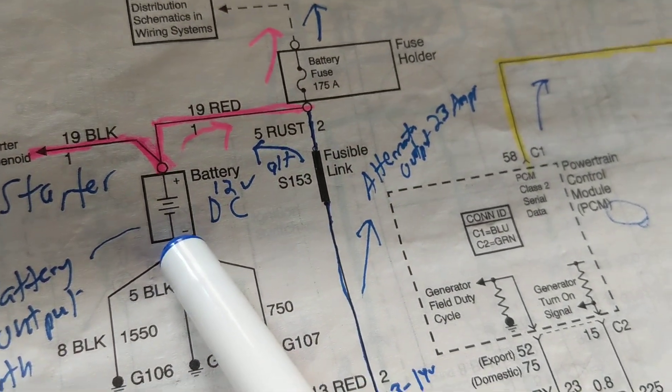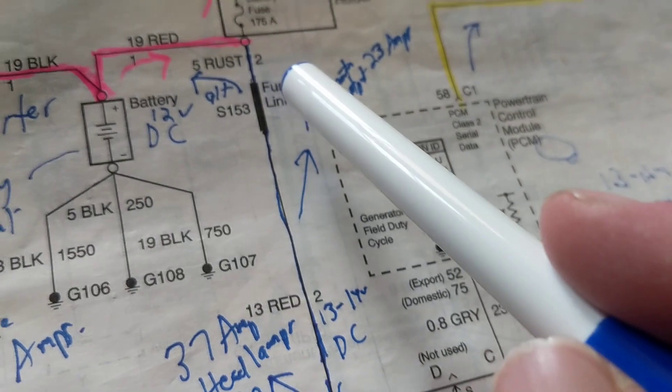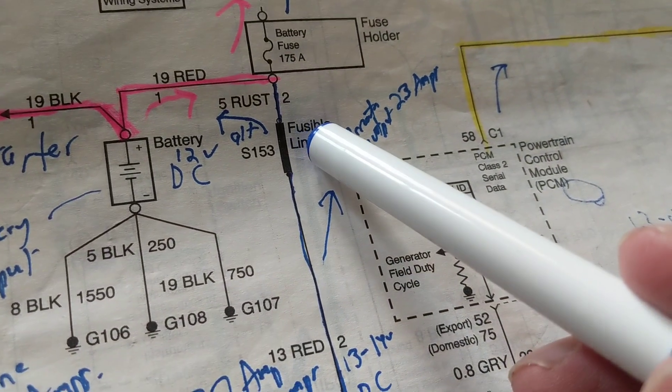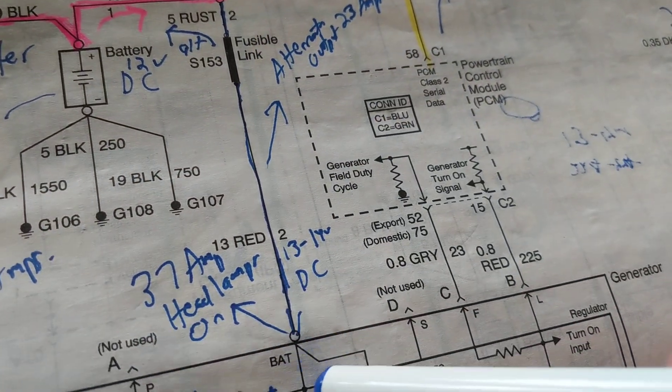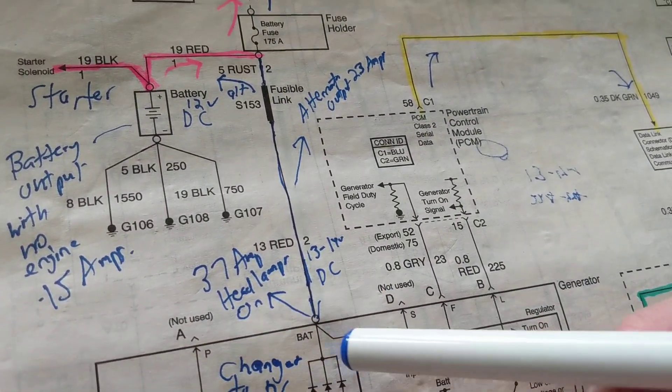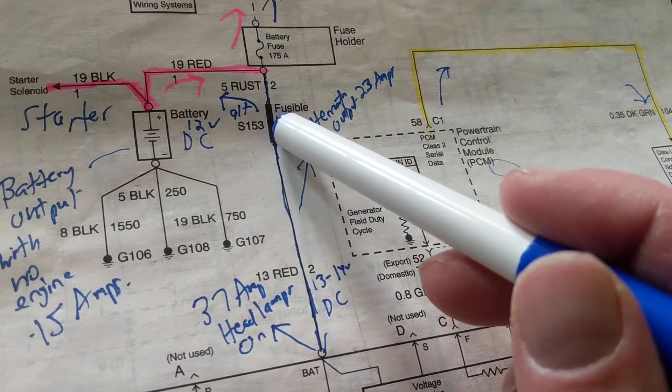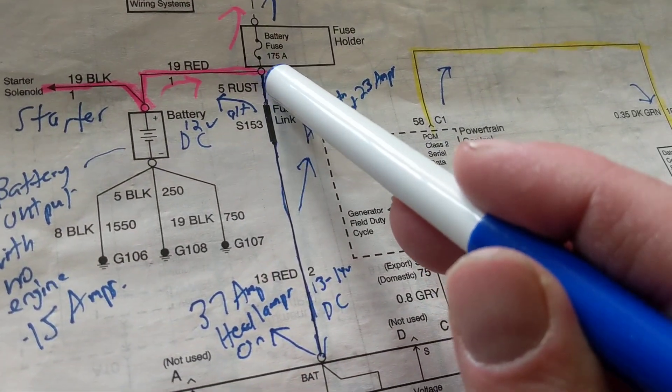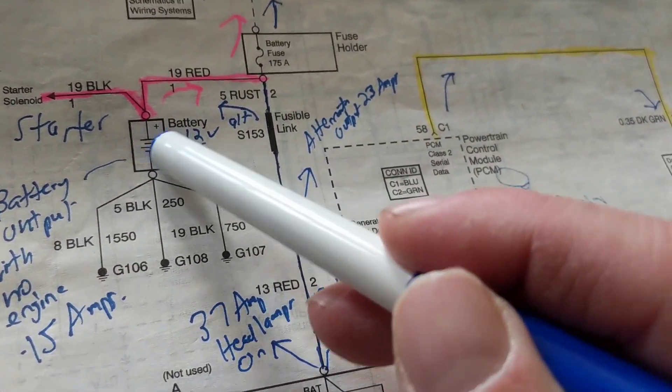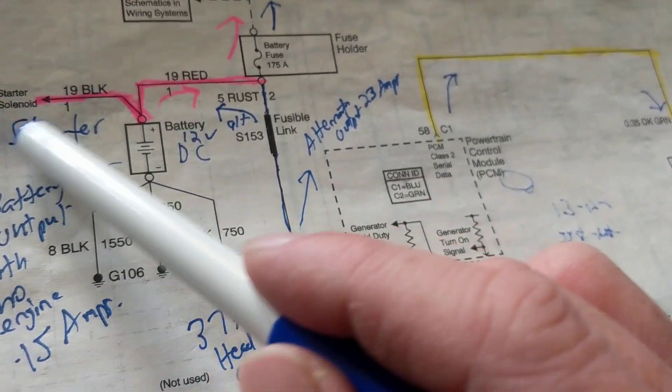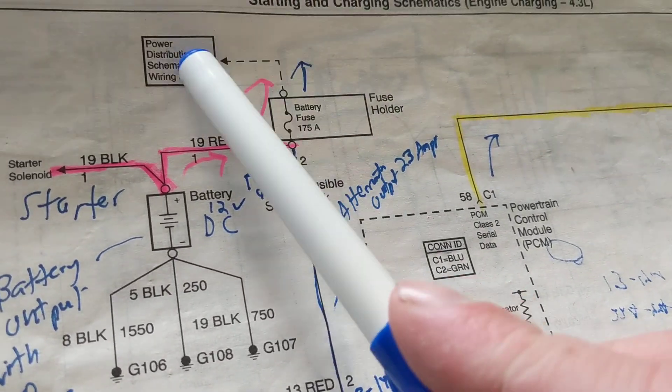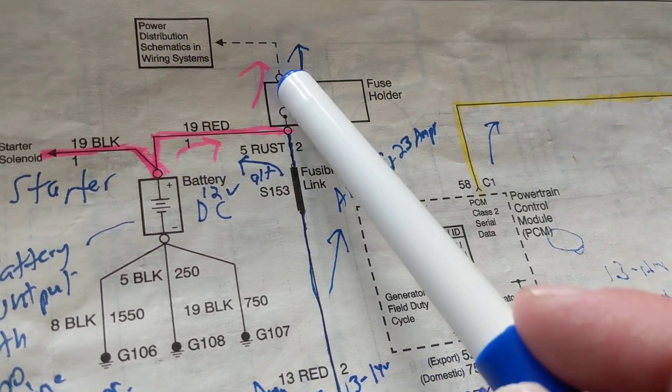We just said the fusible link might open up. Fusible link opens up - guess what? Now the alternator cannot do its job because the alternator, if you look at the diagram, I'll try to hold it still, alternator starts working, the BAT cable that's connected to the post terminal of the alternator, current is being fed to the battery to recharge it. The starter is not in the picture anymore. We still need current from the alternator feeding the power distribution, accessories, the sensors, the computers, the ignition modules, the fuel injectors.